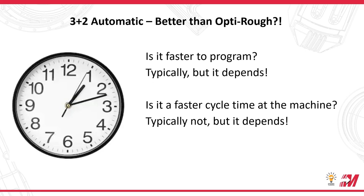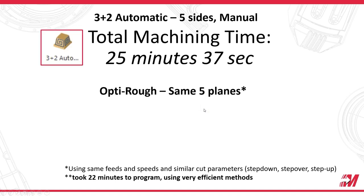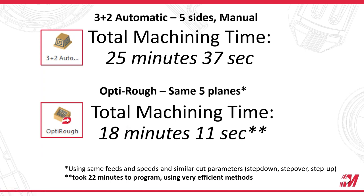Is 3 Plus 2 Automatic faster in cycle time at the machine — more efficient than OptiRough? In my testing at the machine, it is typically not. In almost every case I ran, if I manually programmed with OptiRough, 3 Plus 2 Automatic is going to be slower. Here's the data on that specific part we just cut: the total machining time with 3 Plus 2 Automatic was 25 minutes and 37 seconds. By manually programming with OptiRough using the same five planes, same feeds and speeds, and similar cut parameters, I got a total machining time of just over 18 minutes — leaving seven minutes on the table in machine time.